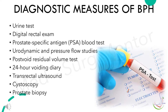Diagnostic measures done to rule out BPH are urine test, digital rectal examination, prostate specific antigen blood test, urodynamic and pressure flow studies, post void residual volume test, 24-hour voiding diary, transrectal ultrasound, cystoscopy, and prostate biopsy.